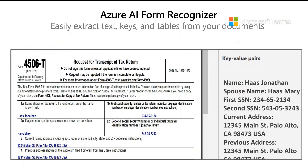RPA stands for Robotic Process Automation. You can think of it as a way to automate common clerical tasks that you might otherwise have to do by hand. For example, rather than manually doing all the data entry, you could scan a form, do an extraction, and then check whether that extraction was correct.